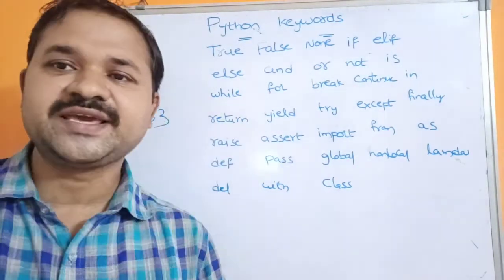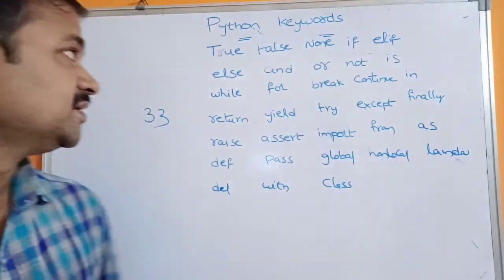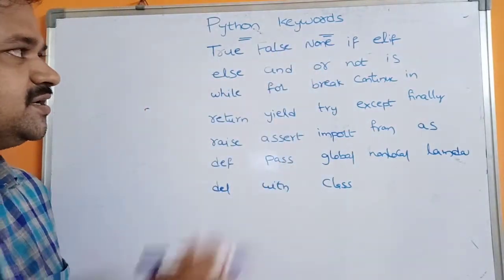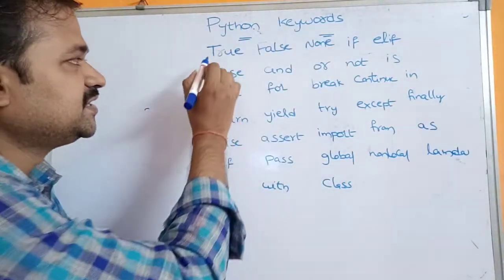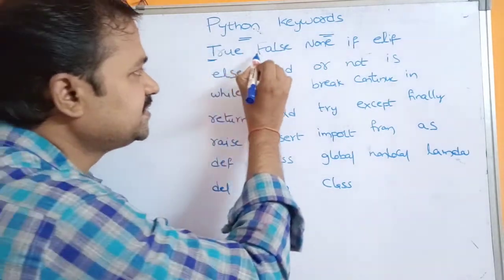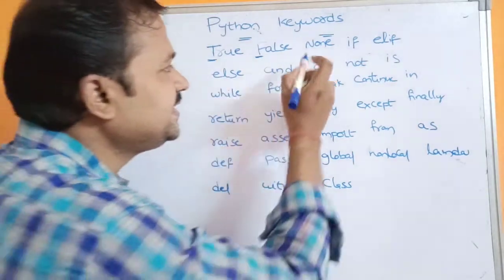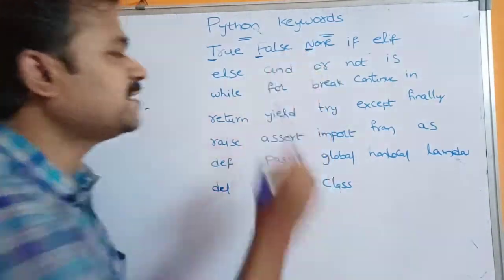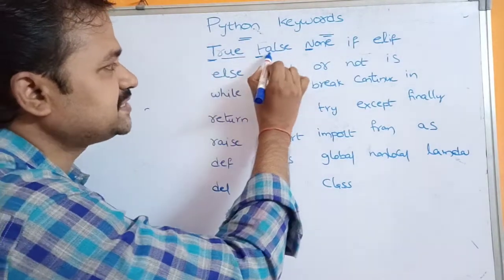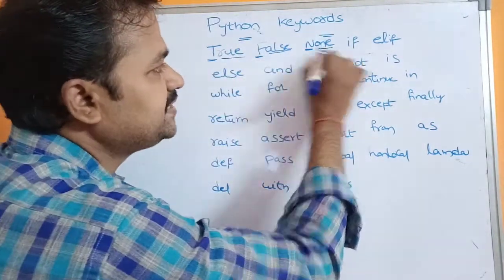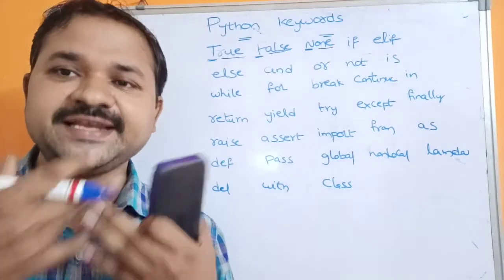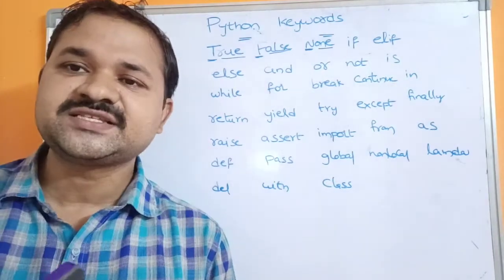Let's see all the keywords one by one. The first keyword is True, the second is False, and the third is None. In these three keywords, the first letter is uppercase: T in True, F in False, and N in None. The remaining letters are lowercase. Keywords are case sensitive, meaning there is a difference between lowercase and uppercase letters.